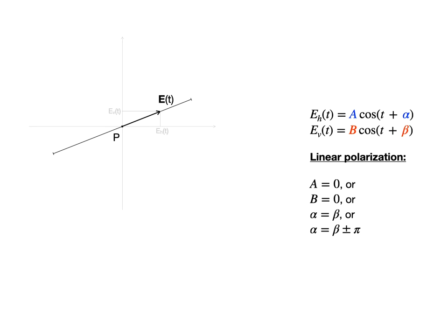This happens if one of the amplitudes is zero, or if the phases alpha and beta are either equal, or shifted by 180 degrees relative to each other.